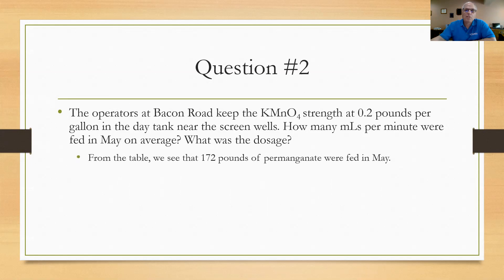When I look I see from the table that we used 172 pounds of permanganate in May. We know that May is a month with 31 days. So 172 pounds in May divided by the fact that each gallon had 0.2 pounds of chemical in it, that tells me I must have used 860 gallons of the permanganate solution to provide that 172 pounds of usage. If I take the 860 gallons and convert that to milliliters by multiplying by 3,785, I divide by 30 days and I divide each of those days by 1,440 minutes. I would see that they would have a feeder setting of about 75.3 milliliters per minute fed on average.